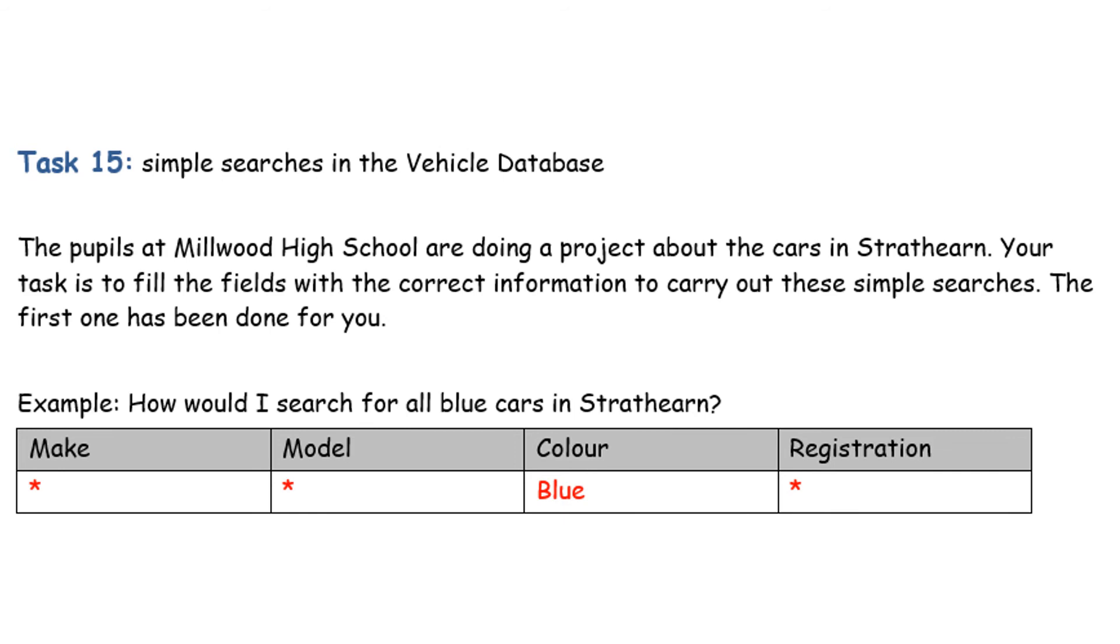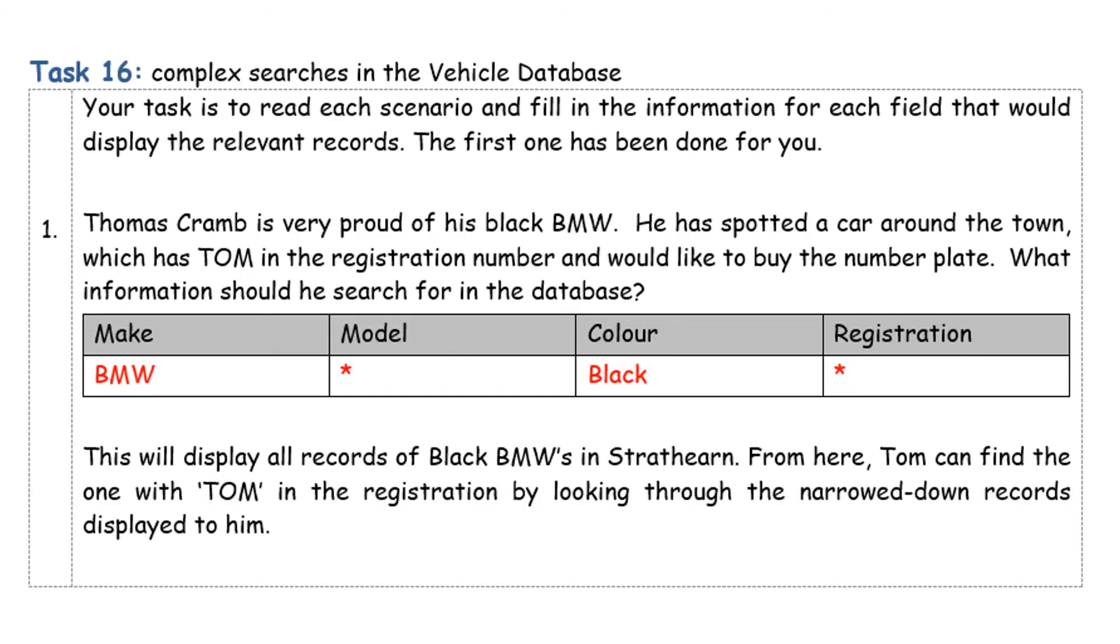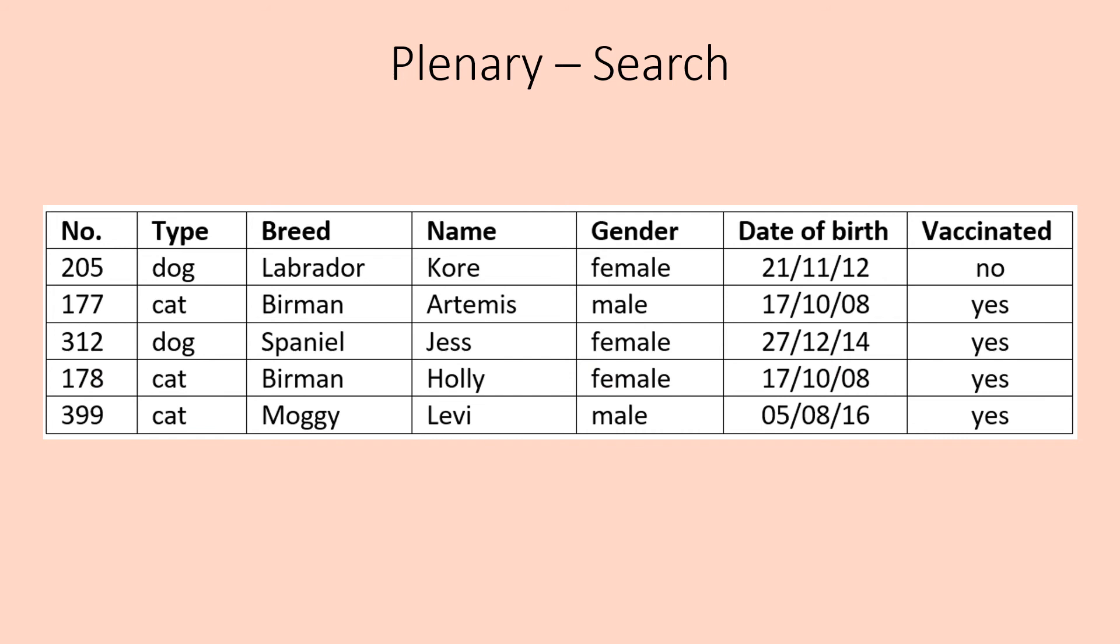Now that you've finished task 15 and 16, it's time to do the plenary task. What you're going to do is have a look at the questions on the task sheet and then use this database table to help you answer them. For example, if I asked you for the name of the animal born on the 27th of the 12th 2014, you would have a look at the date of birth, look for the one that is born on the 27th of the 12th 2014, and you would know that it's a spaniel dog named Jess. It's as straightforward as that. You've only got a couple of those questions to complete for the plenary task and then we're going to finish the lesson.